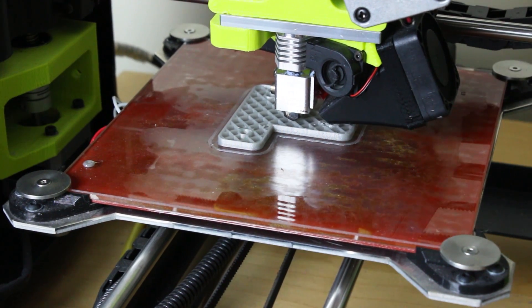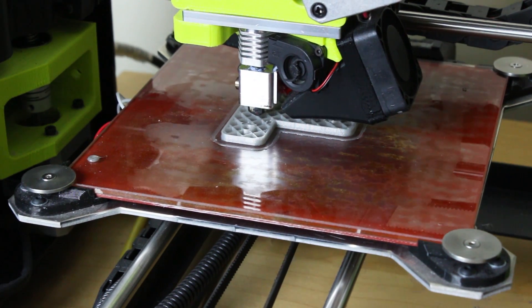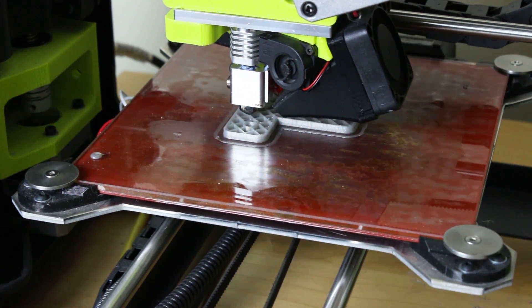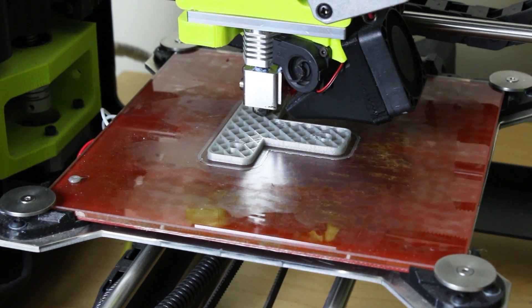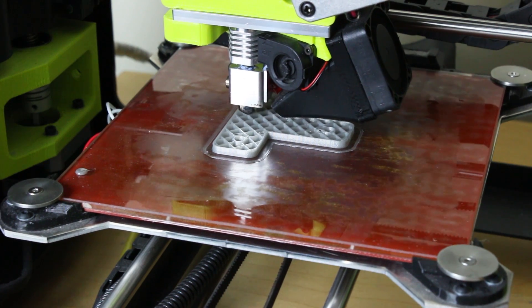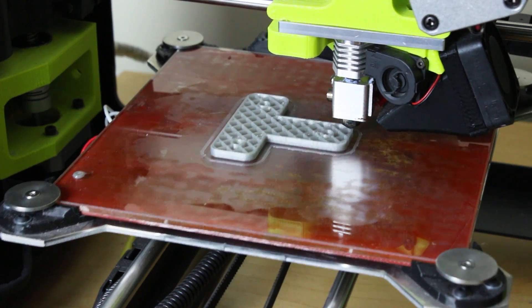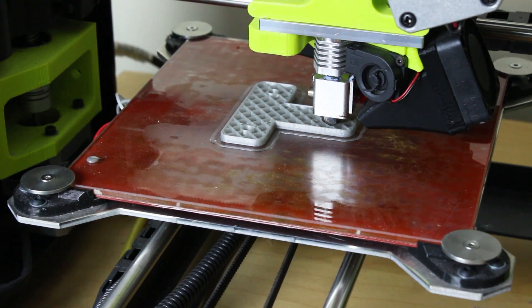So we're printing this on the Lulzbot Mini with the Flexi-Struder. And you can see that's a fairly low density infill. It should be quite squashy but hopefully with the wall thickness and the top and bottom it should be quite firm. As well as that sort of serration we've got with the lumps on the what will in fact be the bottom. So I'll have to print one and see how it comes out.